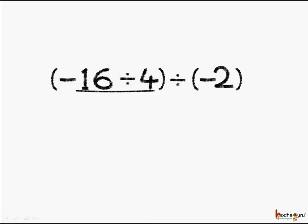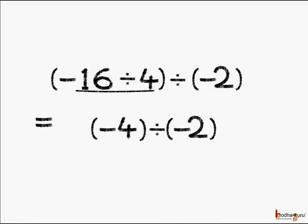First, (minus 16 divided by 4) divided by minus 2. Minus 16 divided by 4: we know 16 divided by 4 is 4, and a negative number divided by a positive number gives a negative number, so the answer here is minus 4. Then we divide it by minus 2. We know 4 divided by 2 is 2, and when dividing one negative number by another negative number, the result is always positive. So here we get plus 2.